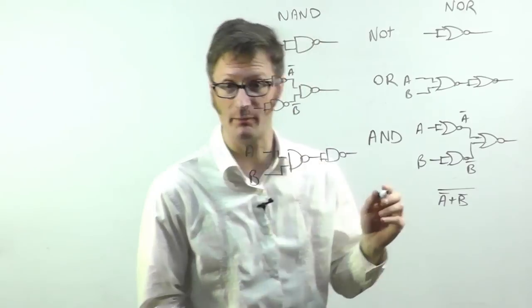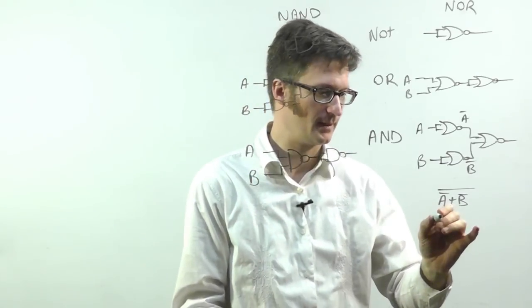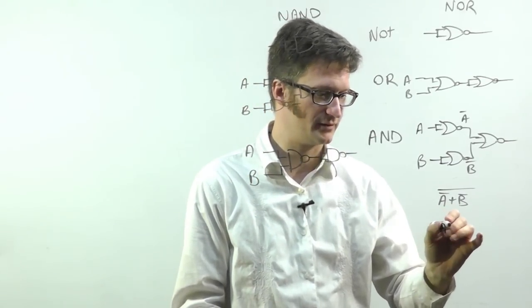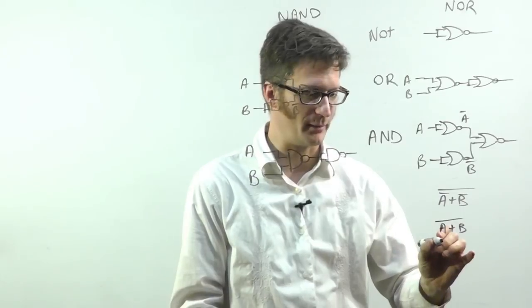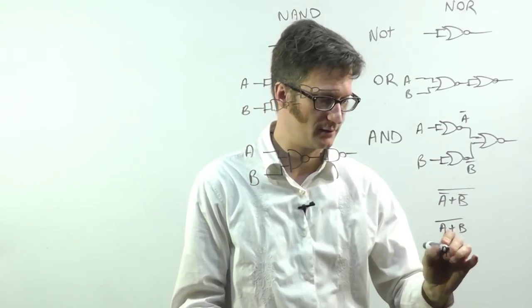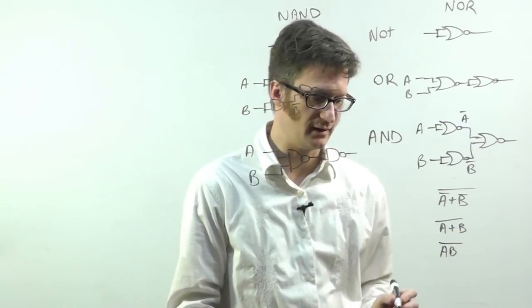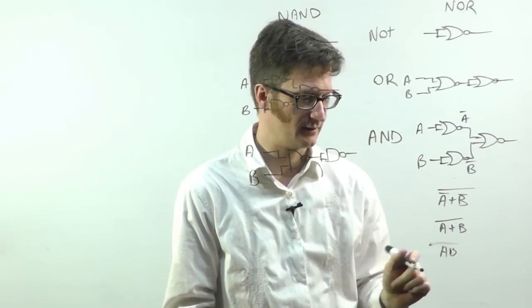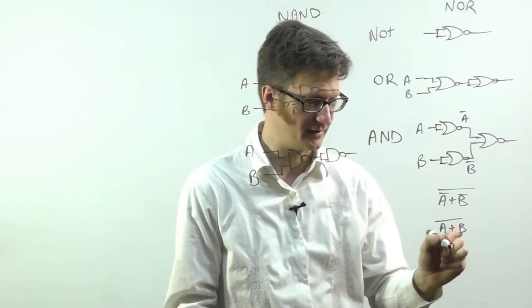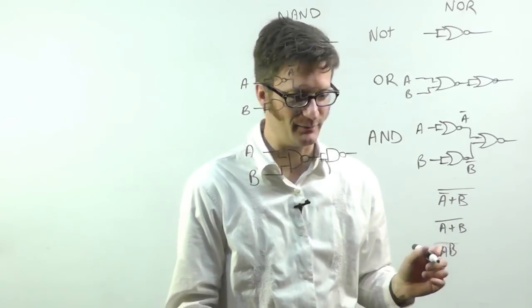That doesn't look like an AND yet, but we'll apply De Morgan's Theorem. So we invert the individual terms, swap AND for OR, then invert the entire thing. And if I hadn't just erased part of it, that looks like A AND B.